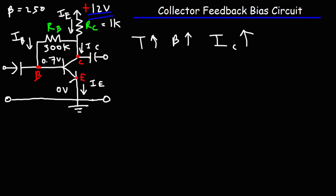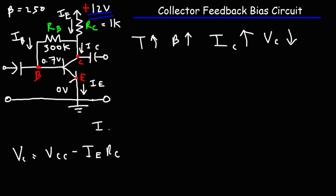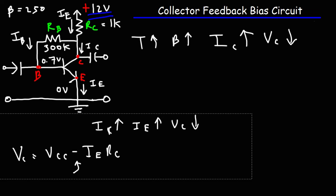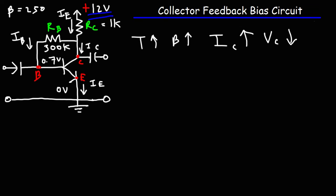This circuit is relatively stable against temperature changes. When temperature rises, beta increases, the collector current increases, and VCE decreases. VCE is the difference between VCC and the voltage drop across RC. As temperature goes up and collector current increases, the emitter current increases too, which raises the voltage drop and decreases VC.